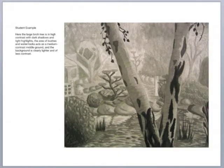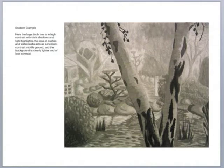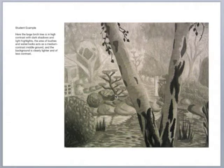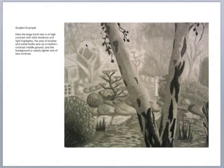Here we have an example from a former student of mine — this is similar to what we're going to do as the next project: an ink drawing of a landscape. We see this birch tree in high contrast with dark shadows and light highlights. Looking at the middle ground, we see bushes and trees — I believe this is taken from a Japanese garden type setting — so here we have middle contrast, and then in the background everything is very light in tone with very little contrast.